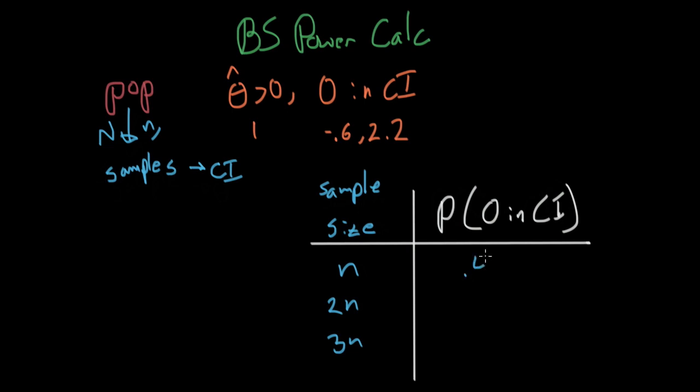So for example, for n, it might be 0.3. For 2n, it might be 0.05. For 3n, it might actually be 0.01. So maybe we just need to do thrice the sample size and we'll be good.